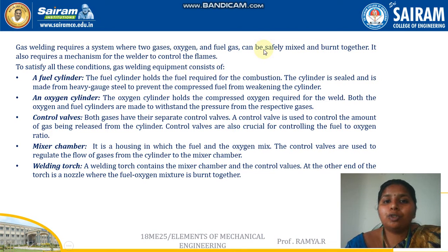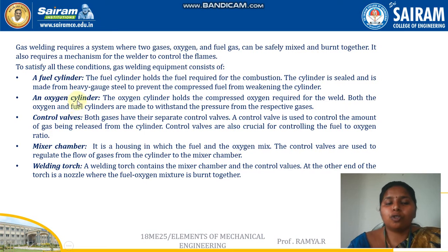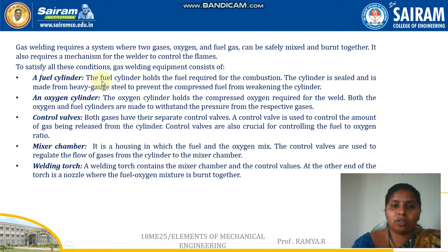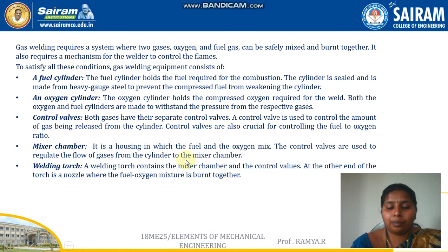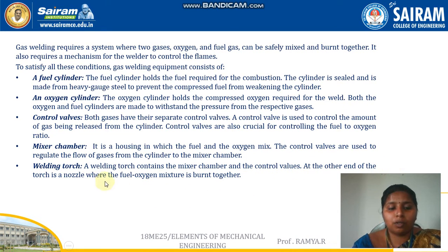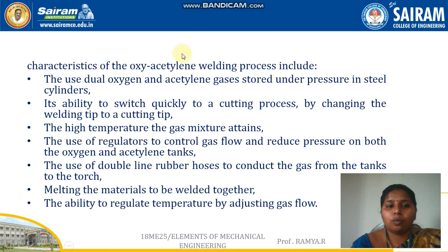The fuel gas can be acetylene or hydrogen, which are safely mixed together as oxy-acetylene or oxy-hydrogen. It requires a mechanism to control the flames. The equipment used for gas welding includes a fuel cylinder and an oxygen cylinder, which are combined at a single point with control valves. A mixer chamber is used to mix both gases, and a welding torch contains the mixture chamber and control valve. At the other end of the torch is a nozzle where the fuel-oxygen mixture is burnt.